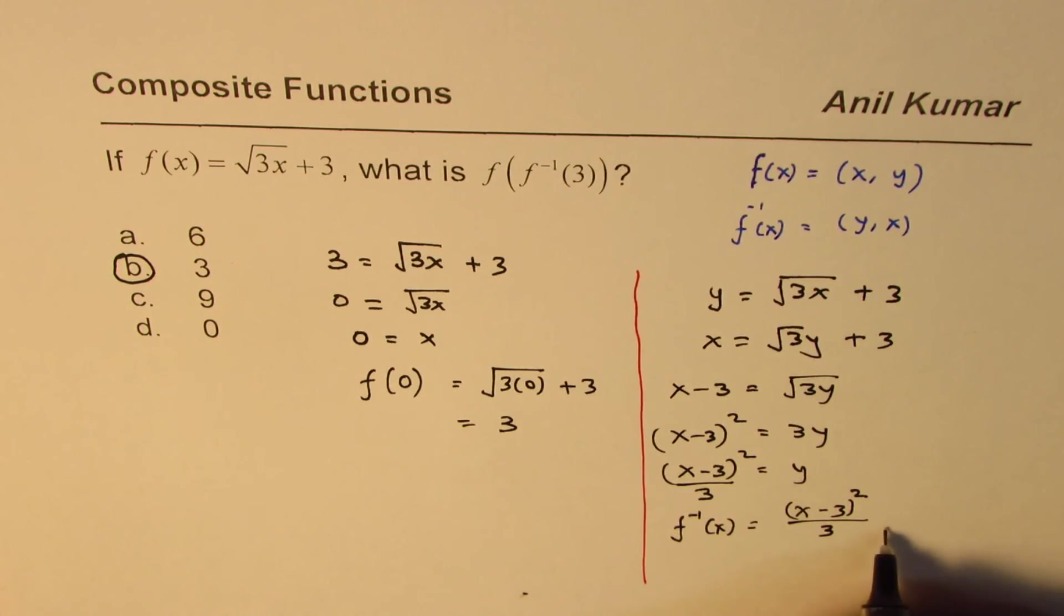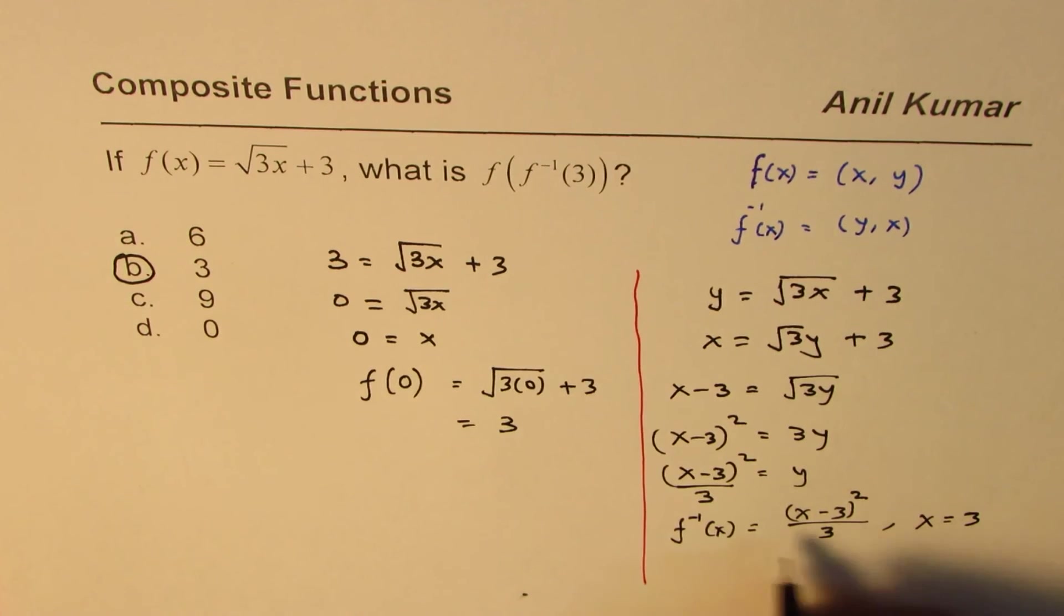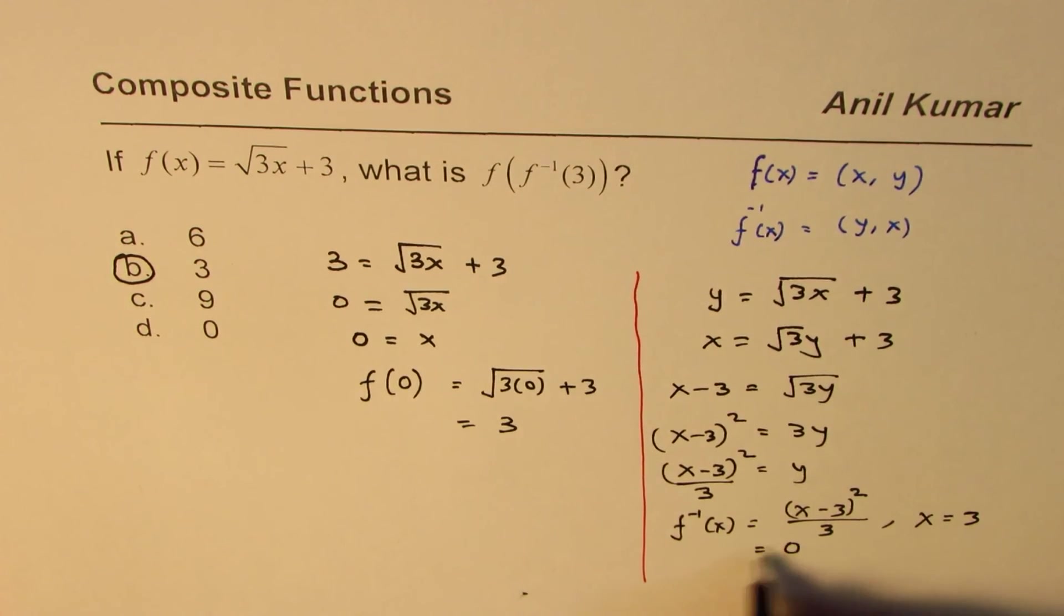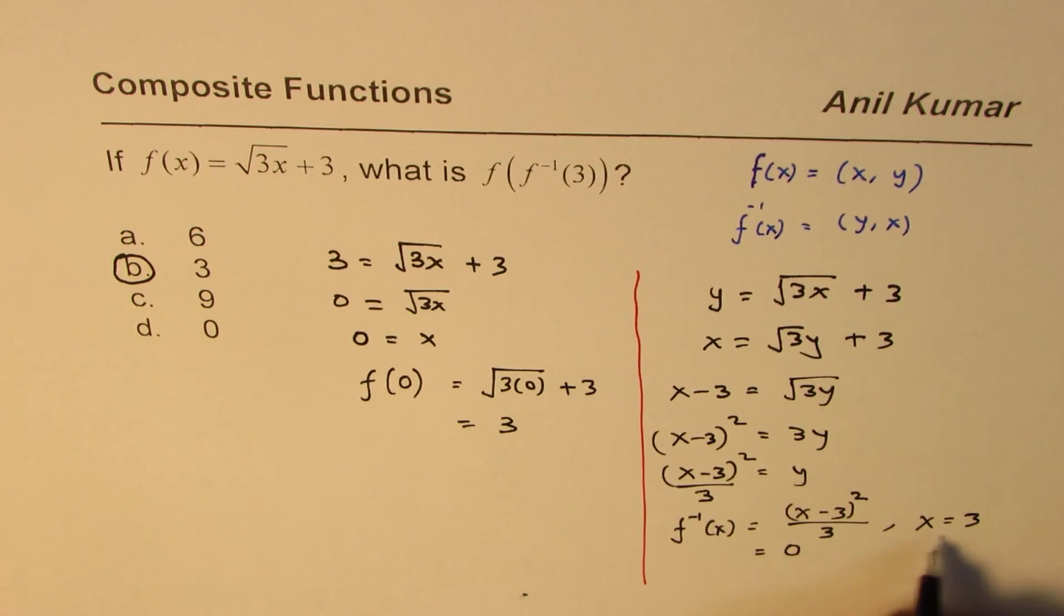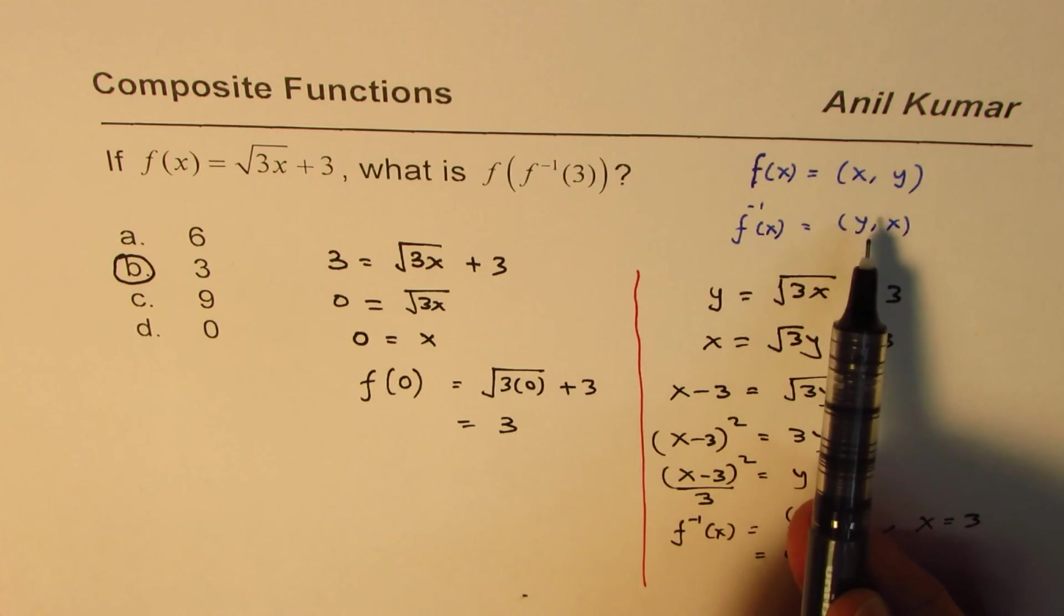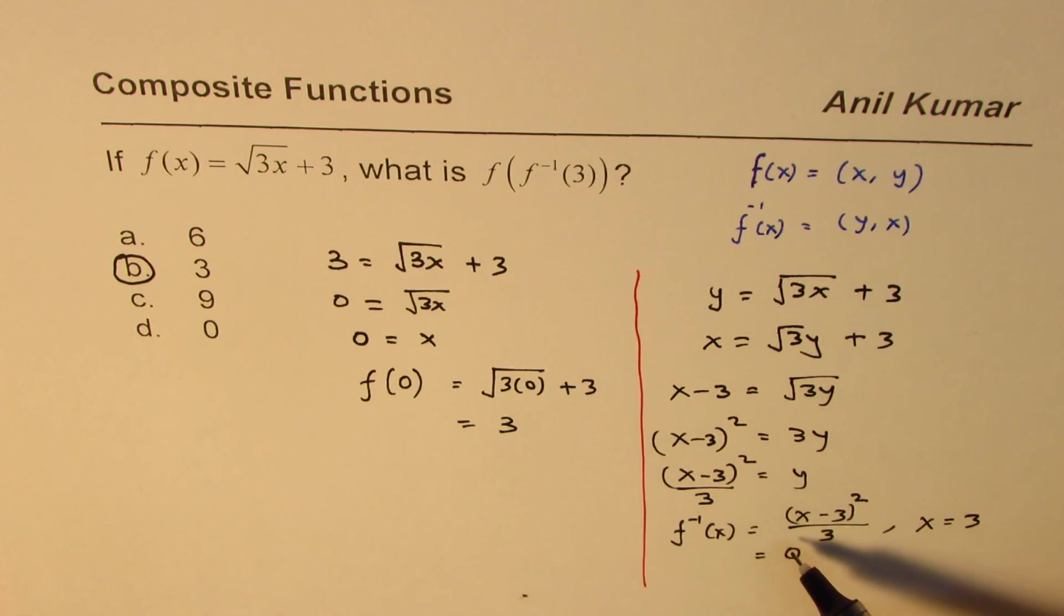Now if I write x equals 3 here, 3 minus 3 is 0, so you get that value as x equals 0 for x equals 3. But it takes that much longer, do you see that? Therefore it is important to understand the concepts, save this much time, and then do it that way. You can actually complete the test faster.